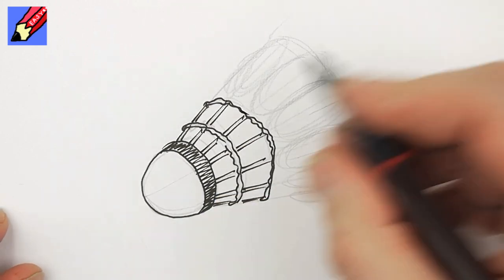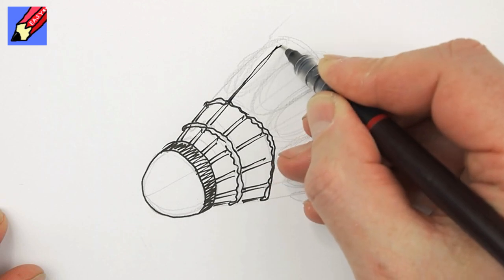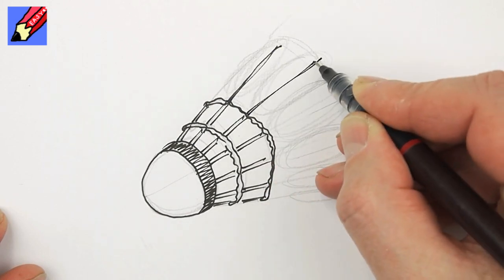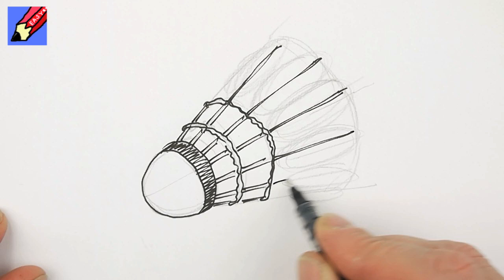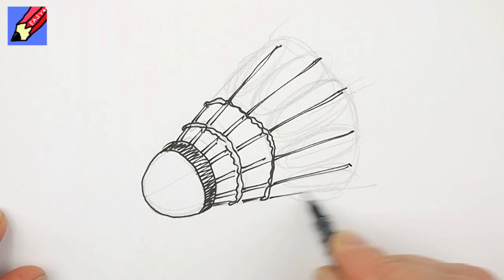And then kind of take those, the shaft of the feathers, the central part of the feathers, out to the end like that.